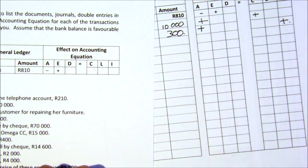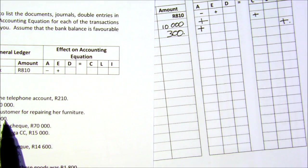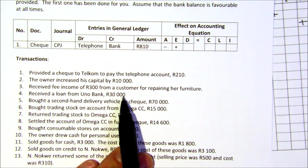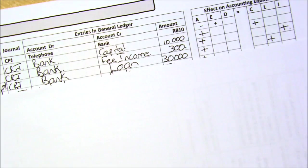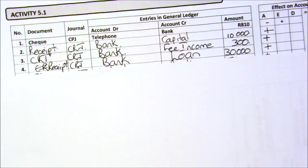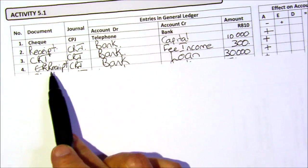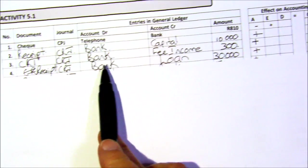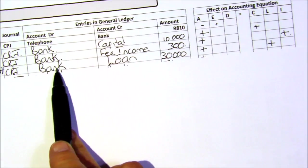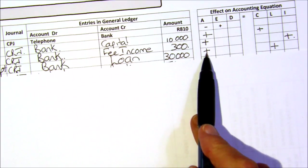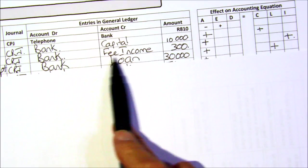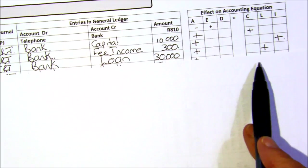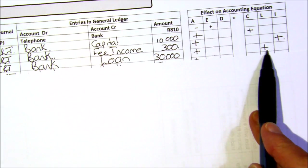We received a loan from Uno Bank for 30,000. When you receive a loan, it'll either be a bank statement or receipt — again, you're receiving, so it goes in the cash receipts journal. Your bank is debited, and that means your asset is increased. You're getting it for a loan, so that means it's a liability, which is also increased.